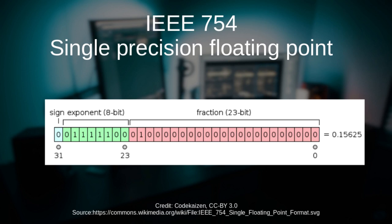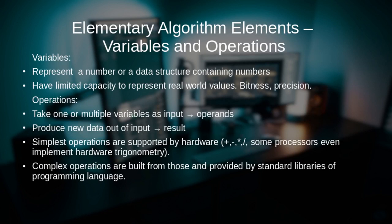However, in the case of computer science, the mantissa is recorded in binary form, and the exponential part is 2 to the power of the exponent instead of 10. That is the difference between mathematics and computer science. We will talk more about this a bit later in this course.